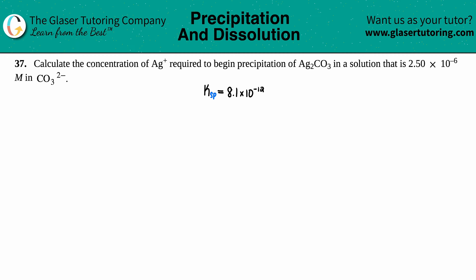Number 37: Calculate the concentration of the silver ion, Ag+, required to begin precipitation of Ag₂CO₃ in a solution that is 2.5×10⁻⁶ molarity in the carbonate ion, CO₃²⁻. We're talking about precipitation of a compound, so that means we're forming a solid.